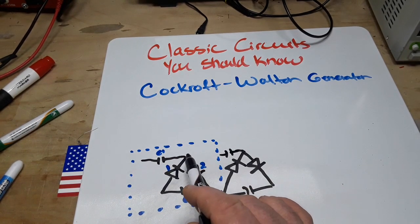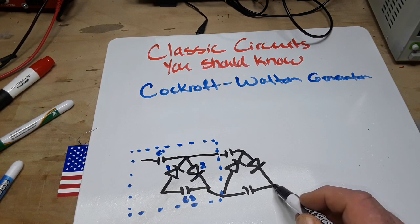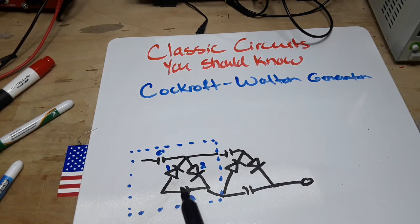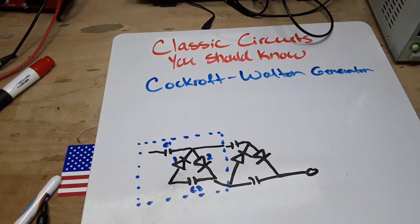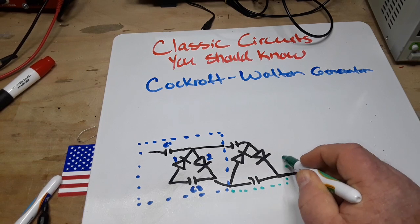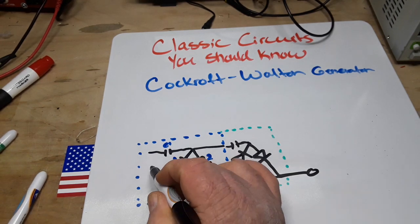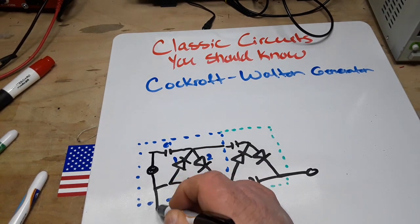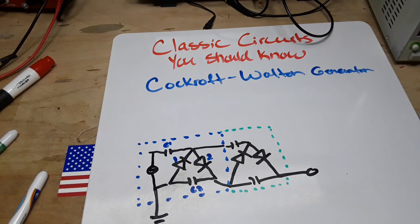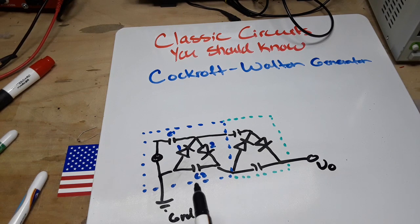And then this connects here, this connects here like such, and over here we'll have our output. So that's one stage, that's two stages. So this is a two-stage generator. We need to put in our AC. C2 goes here like so and this goes to ground. So we have our output here, the out and ground which is our common.